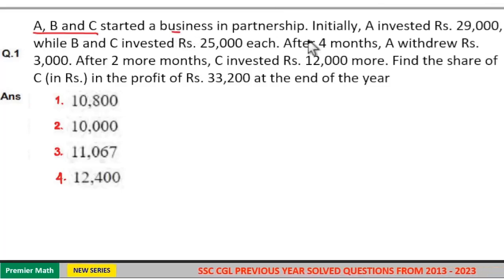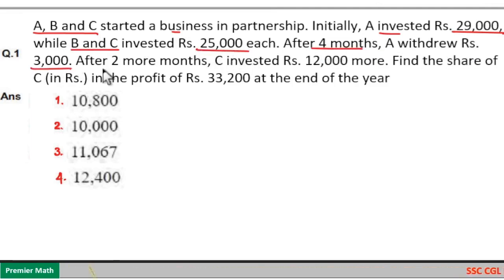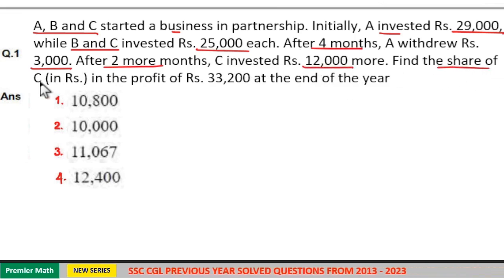A, B and C started a business in partnership. Initially A invested 29,000 while B and C invested 25,000 each. After 4 months A withdrew Rs. 3,000. After 2 more months C invested 12,000 more. Find the share of C in the profit of Rs. 33,200 at the end of the year.